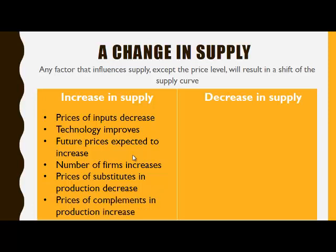When the price of complements in production increases, there will be an increase in supply of a particular product. For example, leather and beef are complements in production. When the price of leather increases, the quantity supplied of leather will also increase, and therefore the supply of beef will increase.